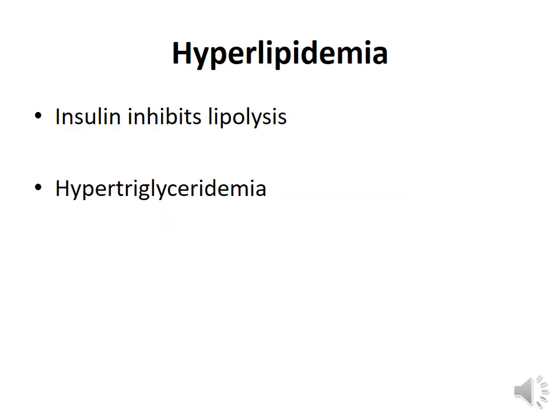Insulin interferes with lipolysis. Since in diabetes mellitus there is a reduction in insulin action — either because it is synthesized in less quantities or because of insulin resistance — there is excessive breakdown of adipose tissue releasing triglycerides. This is responsible for hypertriglyceridemia.